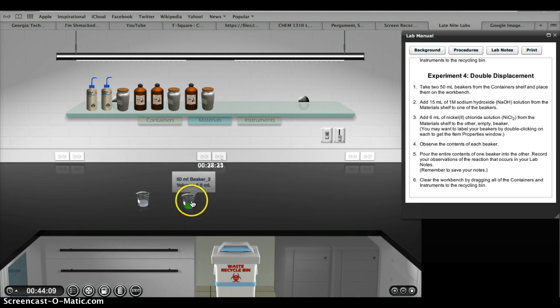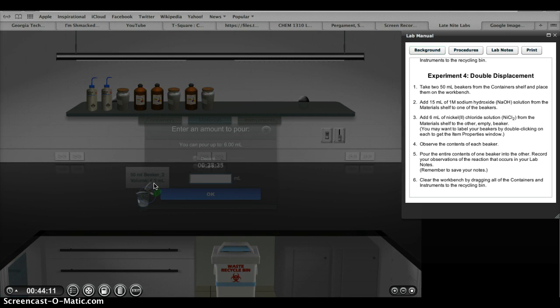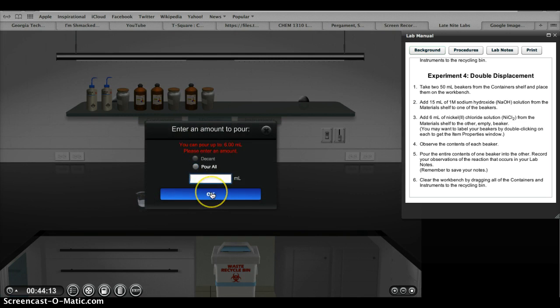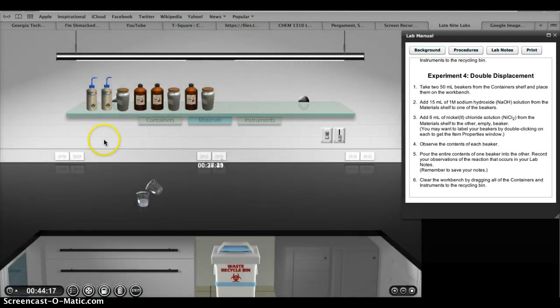So when we mix the two together, the reaction of the two forms a small green precipitate at the bottom, which is the nickel hydroxide, because that is insoluble in water.